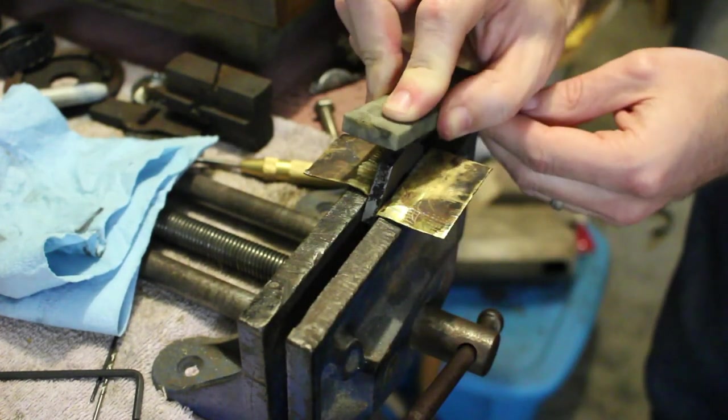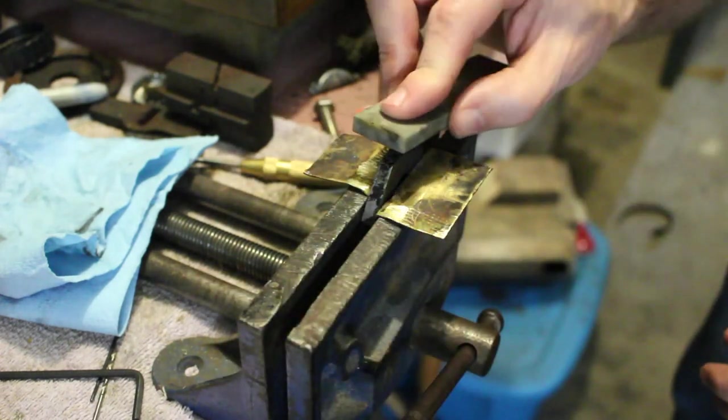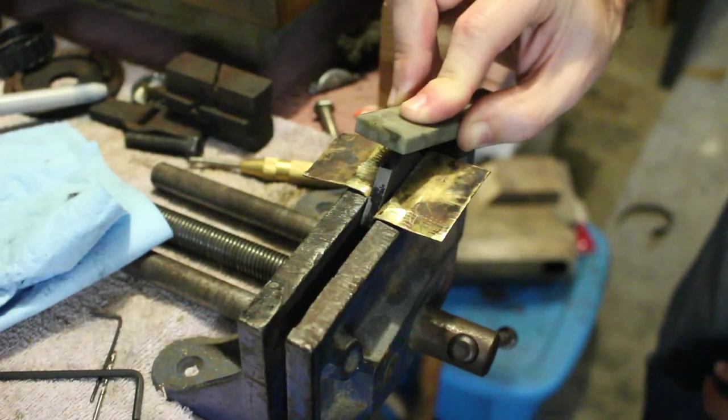The final step is to stone the cutting teeth. That small amount of material that we left when filing the relief behind the cutting teeth will get stoned away now to leave a sharp cutting edge.